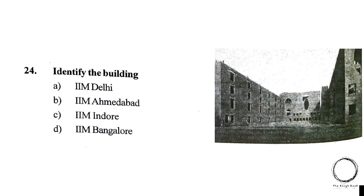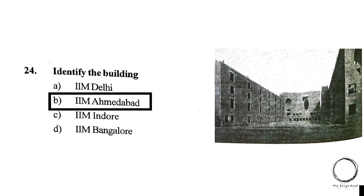Next, identify the building. A. I AM Ahmedabad, B. I AM Delhi, C. I AM Indore, D. I AM Bangalore. The right answer is option A, I AM Ahmedabad.